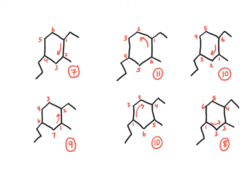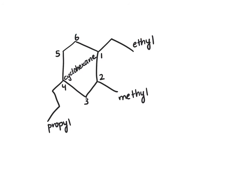The lowest possible sum is going to be from this numbering motif where number one is ethyl, two is methyl, and four is propyl. If we had two that were equal, the tie goes to the first group alphabetically.